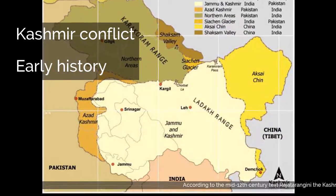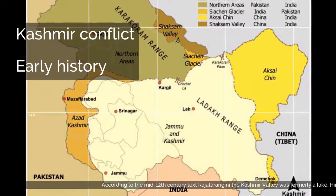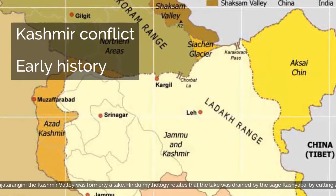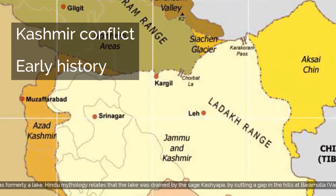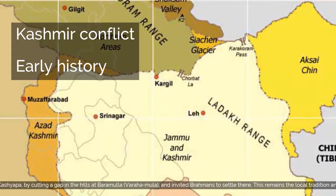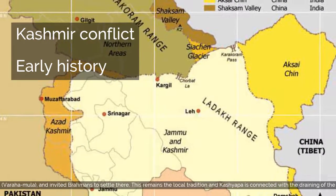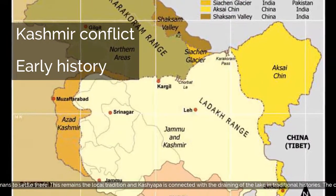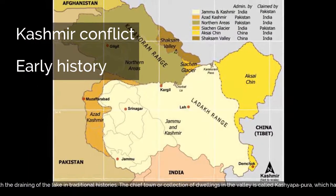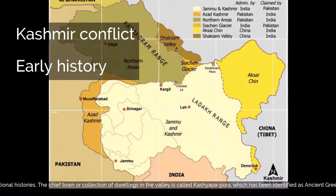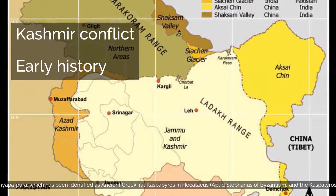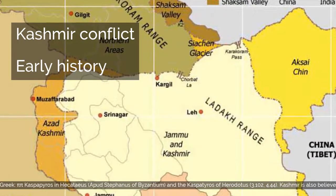According to the mid-12th century text Rajadurangani, the Kashmir Valley was formerly a lake. Hindu mythology relates that the lake was drained by the sage Kashyapa by cutting a gap in the hills at Baramulla, and invited Brahmins to settle there. This remains the local tradition and Kashyapa is connected with the draining of the lake in traditional histories. The chief town in the valley is called Kashyapapura, which has been identified as Ancient Greek Kaspapyrus in Hecateus.